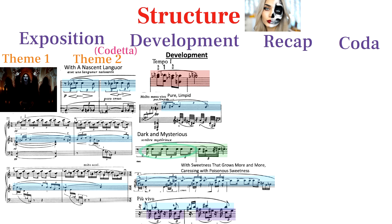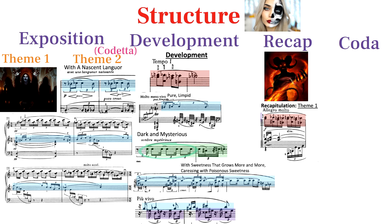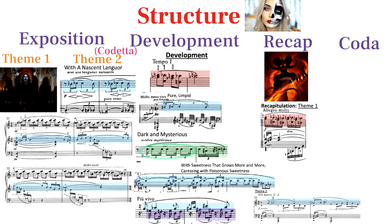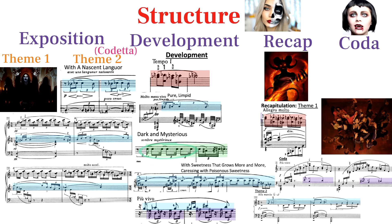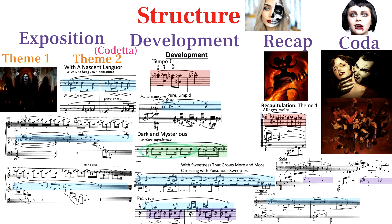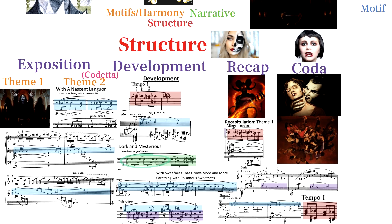There's a turning point at the marking più vivo where evil forces completely take over with high energy. This brings us to a very fast recap with the primary motif furiously. When Theme 2 returns in the recap, it has a completely rigid lifeless rhythm. Theme 2 builds up to a climax in the coda of pure insanity. The coda is sort of like a dance motif, and I picture it as a horrific possession or destruction of the protagonist.